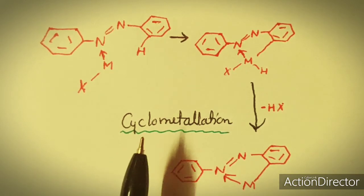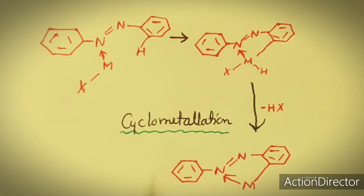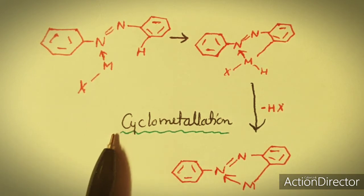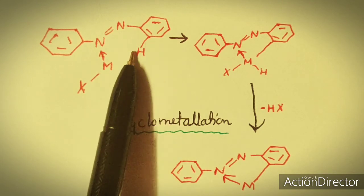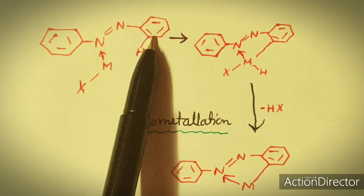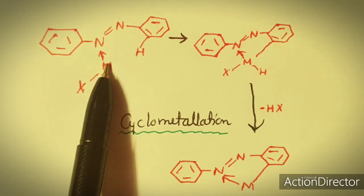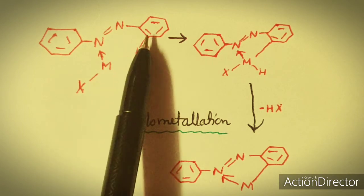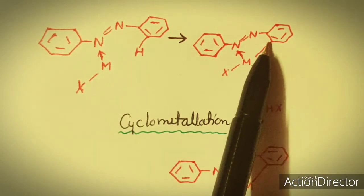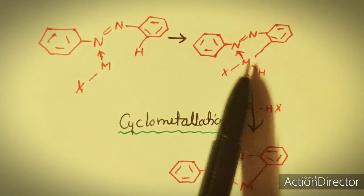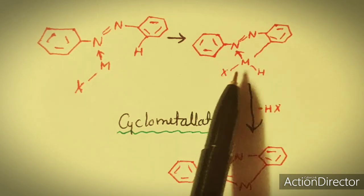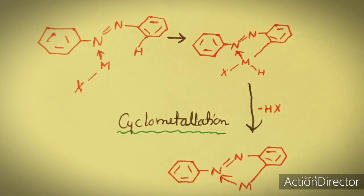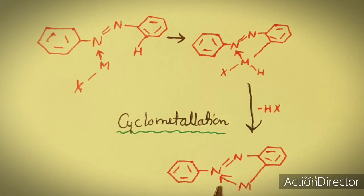Here is another example of C-H activation through intramolecular oxidative addition, which is also a cyclometallation reaction. The C-H bond to be activated is cleaved by the metal center via intramolecular oxidative addition. The carbon and hydrogen both bond to the metal center, and after removal of HX, cyclometallation takes place.